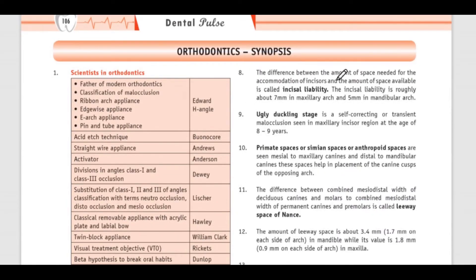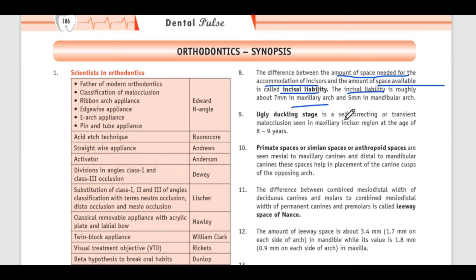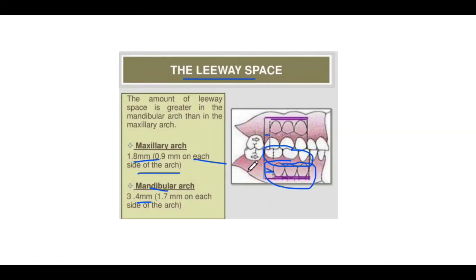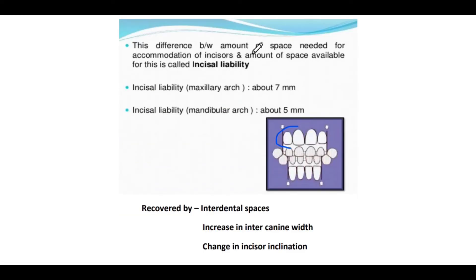The difference between the amount of space needed for the accommodation of incisors and the amount of space available is called incisor liability. The incisor liability is roughly about 7 mm in the maxillary arch and 5 mm in the mandibular arch.